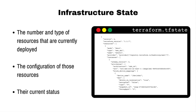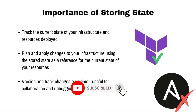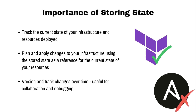In infrastructure as code, the infrastructure state refers to the current configuration and status of your infrastructure resources — including the number and type of resources deployed, their configuration, and current status. Tools that support IAC typically provide a way to store the infrastructure state using a state file, which allows you to track the current state and use it as a reference for making changes. Storing state also allows you to version and track changes to your infrastructure over time, which is useful for collaboration and debugging.